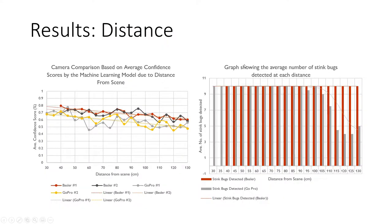Now for the results — as expected, when the camera moves further from the scene the confidence scores also decrease on average for both the Basler and the GoPro. The Basler shows better results, being able to detect all the stink bugs consistently regardless of the distance from the scene, whereas the GoPro starts to miss detections.